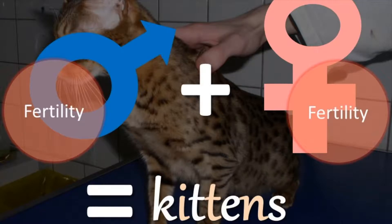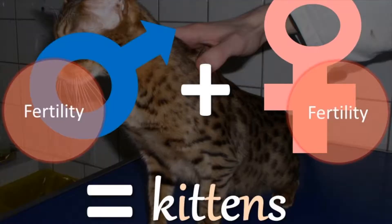We want her to have a healthy uterus, because those embryos will need to implant inside that uterus to develop and give birth to the kittens you're expecting. So those fertility parameters are essential.